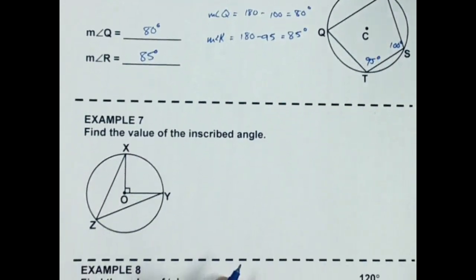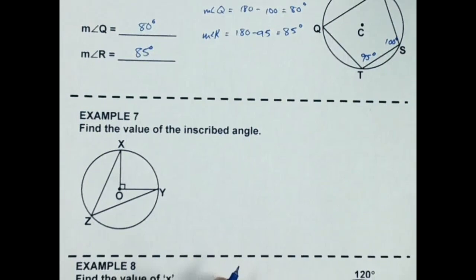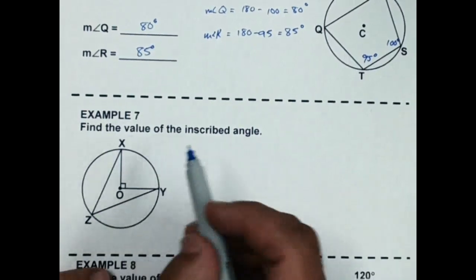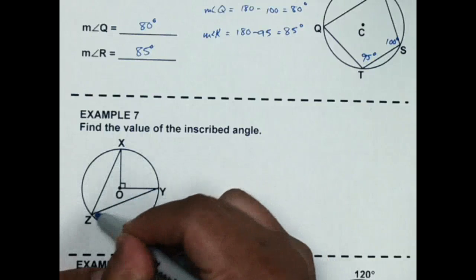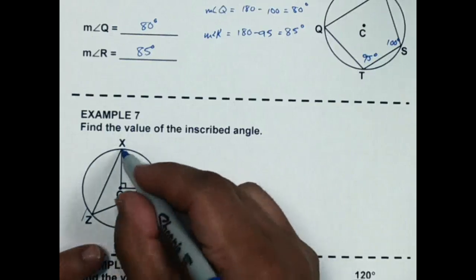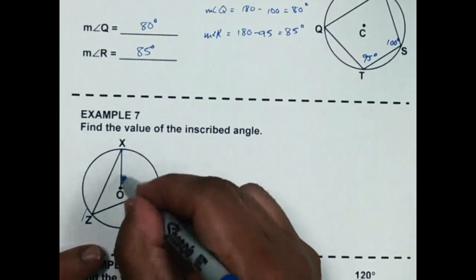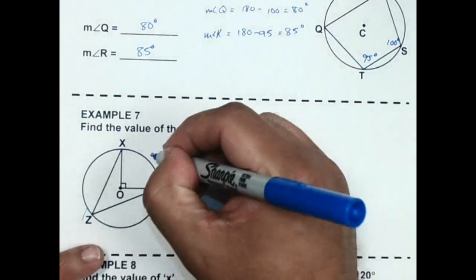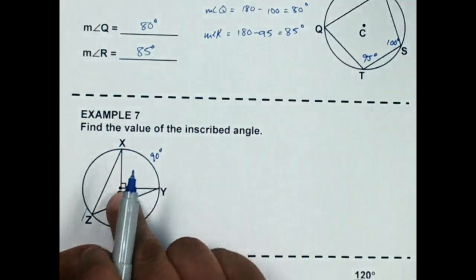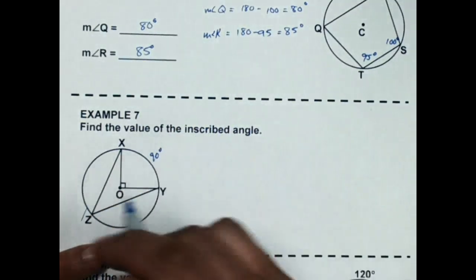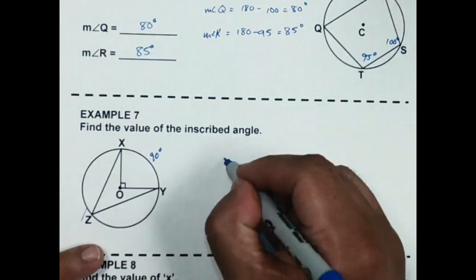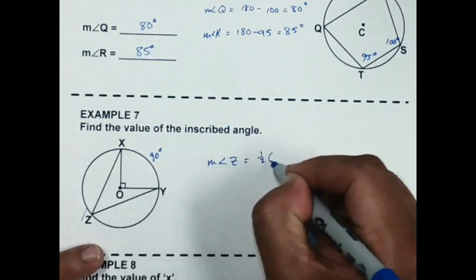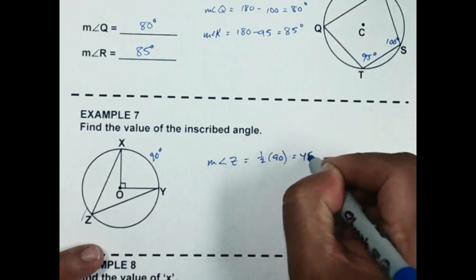In number 7, we need to find inscribed angle Z. There's a central angle inside that is a right angle, which means the intercepted arc is 90 degrees. Since the central angle is 90 degrees, the intercepted arc is 90 degrees. The measure of angle Z is going to be half of 90, which is 45 degrees.